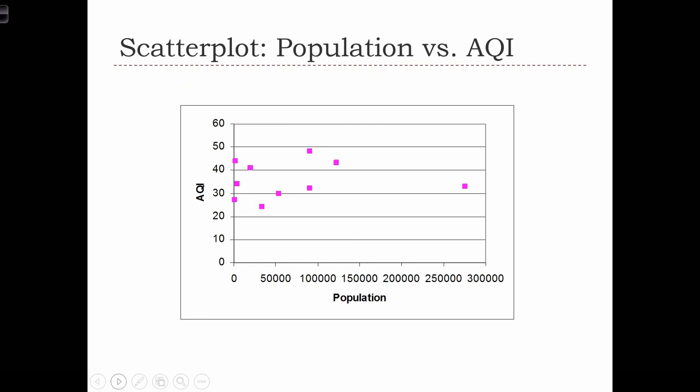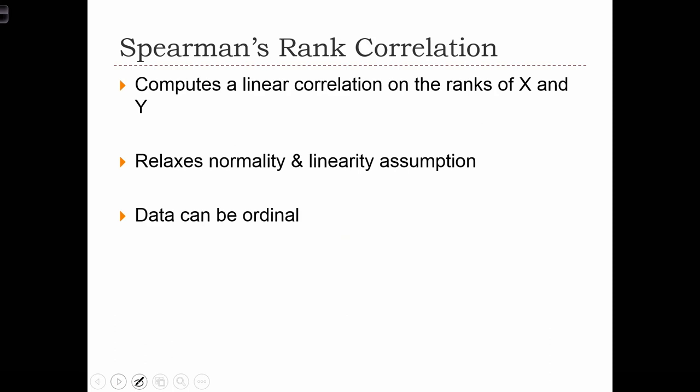And here we have the scatter plot of the two variables, population versus air quality. And the question is, is air quality related to the population? In order to compute this, to conduct this test, we're going to compute a Spearman's rank correlation.